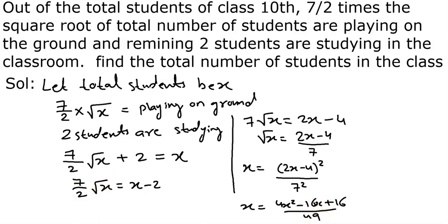Correct. Ab aage dekhte hain. Denominator mein 49 hai, us ko hum shift karenge, x ke saath multiply ho jayega. Forty nine x is equal to four x square minus sixteen x plus sixteen.